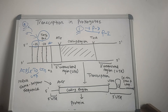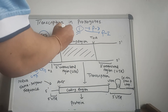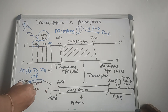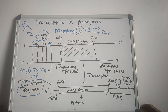Transcription and translation can occur simultaneously in bacteria because there is no processing of prokaryotic mRNA, as there are no introns. The ribosome can begin translating the message even before transcription is complete. The ribosome binds to a sequence called the Shine-Dalgarno sequence in the 5' untranslated region of the message. Protein synthesis begins at an AUG codon at the beginning of the coding region and continues until the ribosome reaches a stop codon at the end of the coding region.